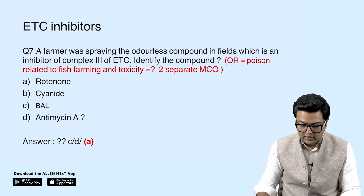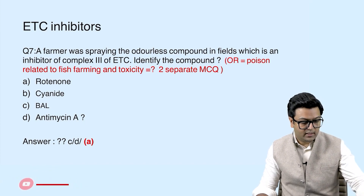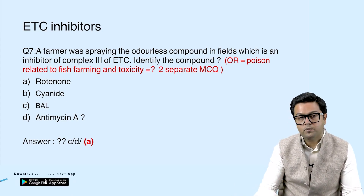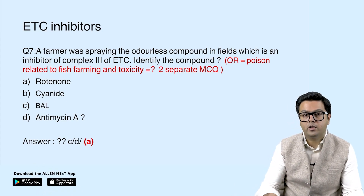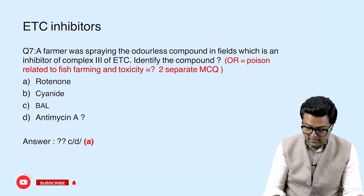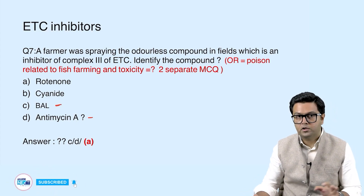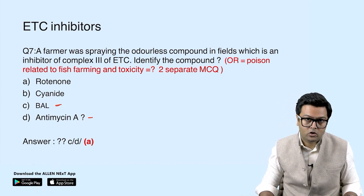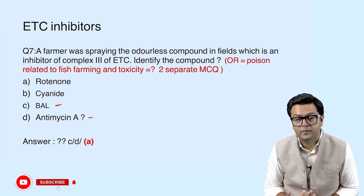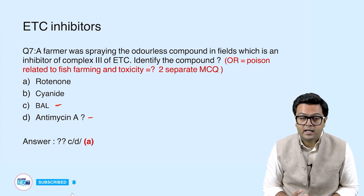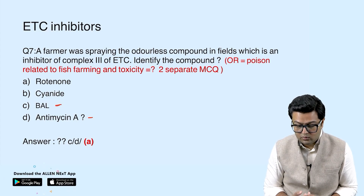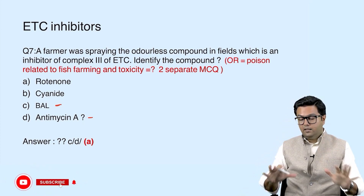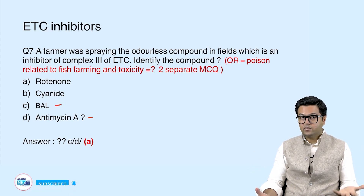Moving to ETC inhibitors: a farmer was spraying an odorless compound in fields — an inhibitor of complex 3. The options included both antimycin A and BAL (British Anti-Lewisite). If both are given as options, this becomes a very difficult question and should be treated as a bonus question.